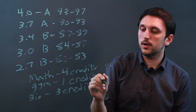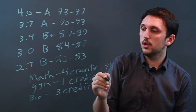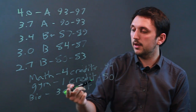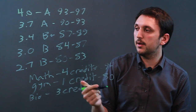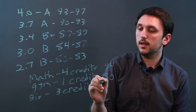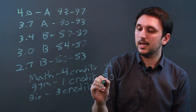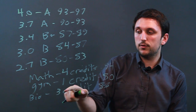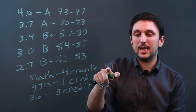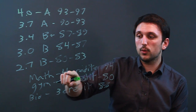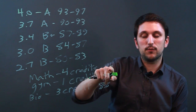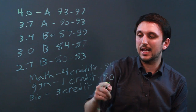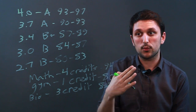And your 1 credit gym class, you have an 80 because you always cut. And your 3 credit Bio class, you have an 88. So what we're going to do is we're going to add — when we average it — we're going to add the 94 four times, we're going to add the 80 one time, and we're going to add the 88 three times.